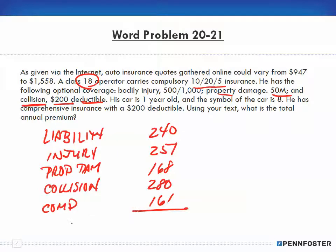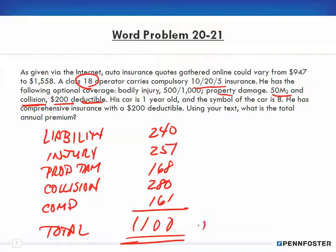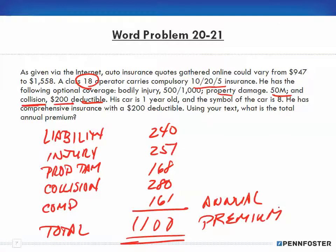We add them all up to get our total premium. When we add all of those up, we have $1,100 as our total annual premium. Go back and watch the video for drill problem 20-13, which has the same options but a slightly different take on the problem.